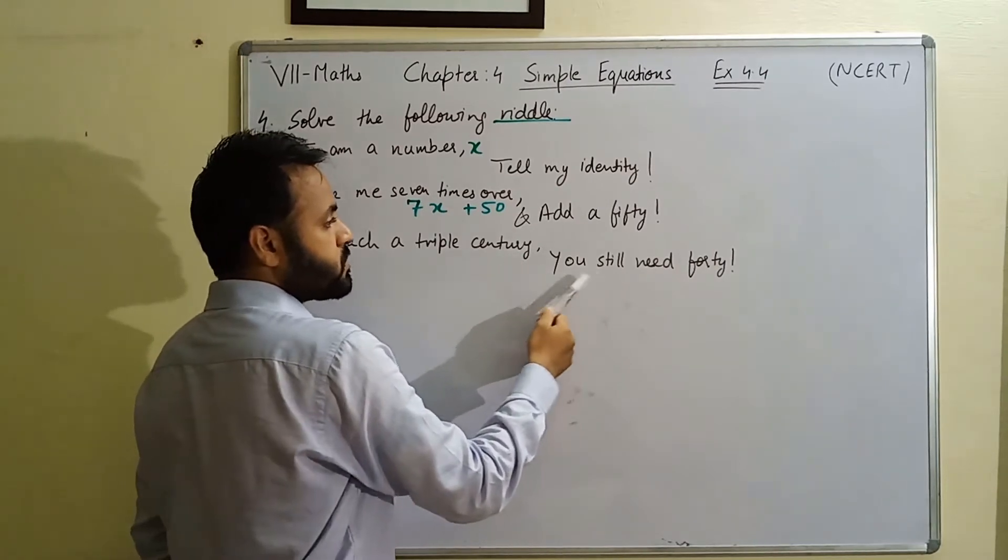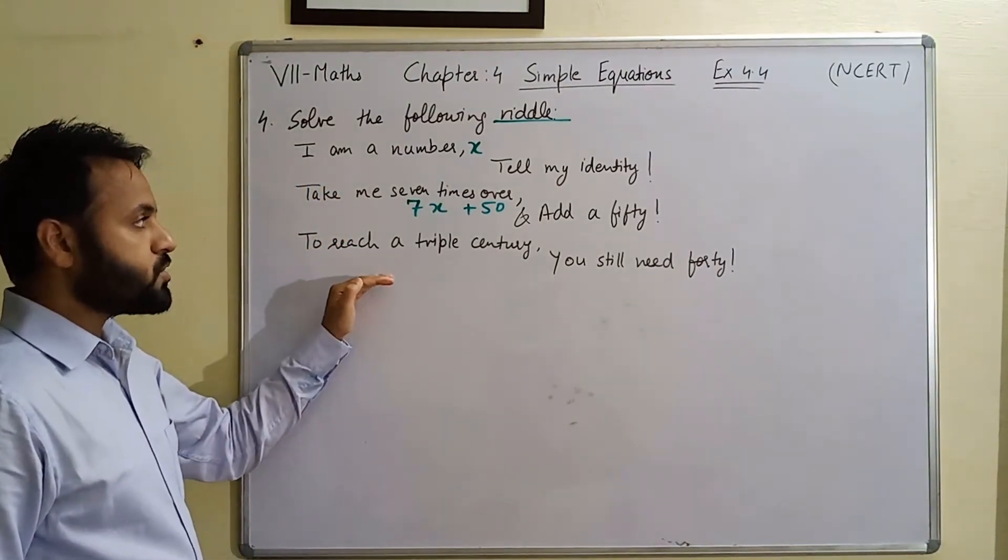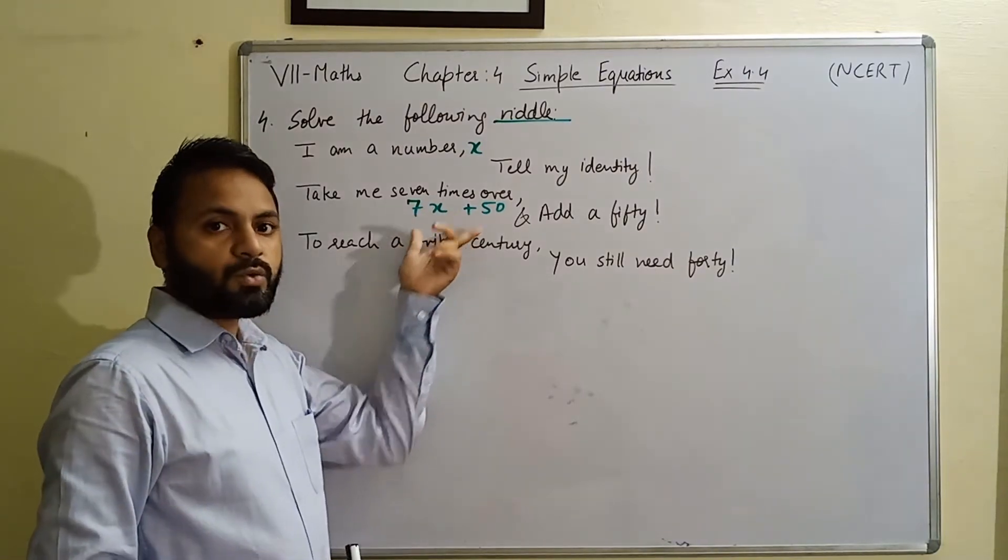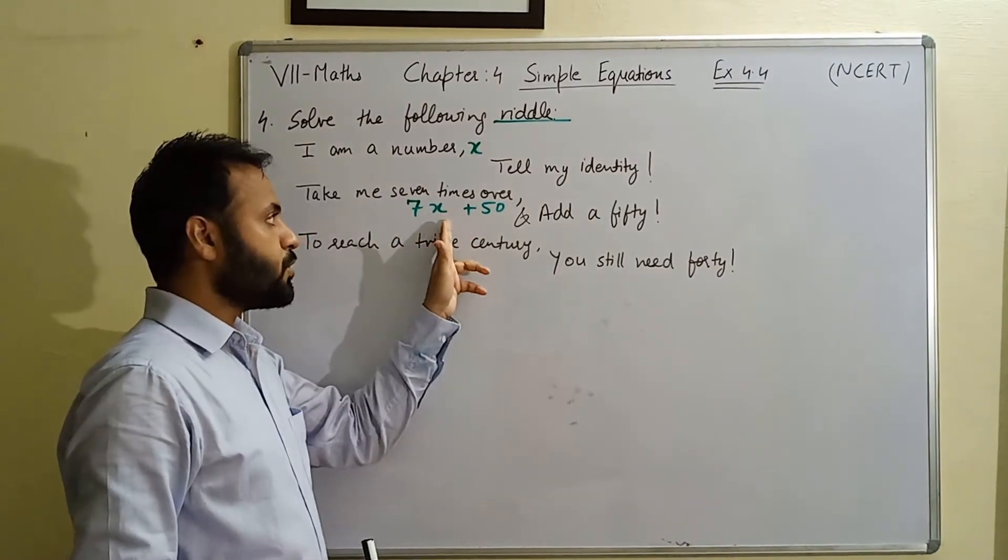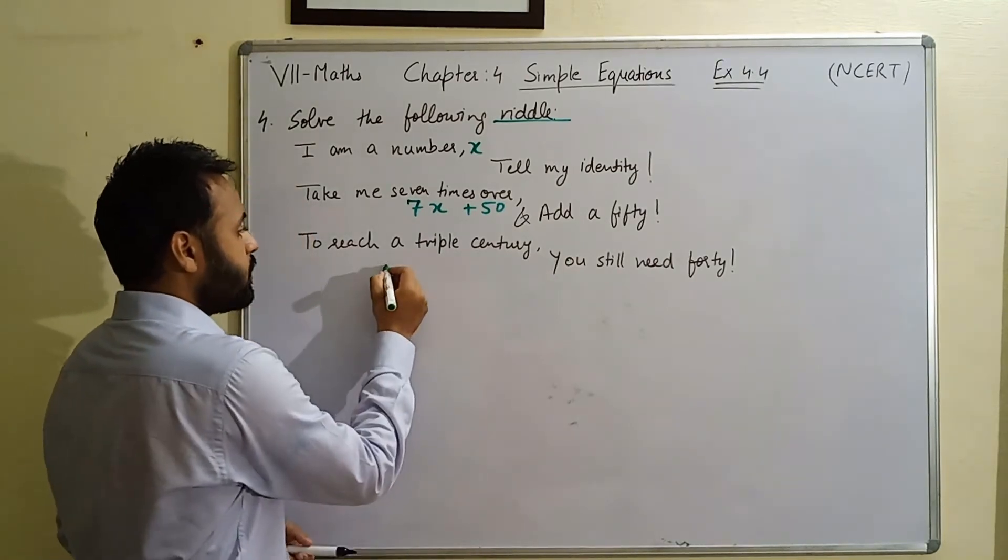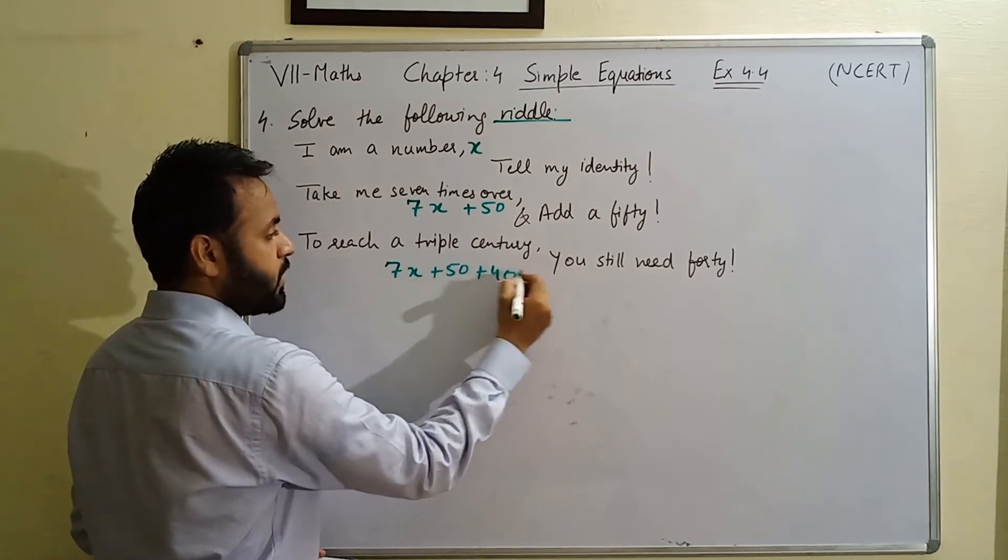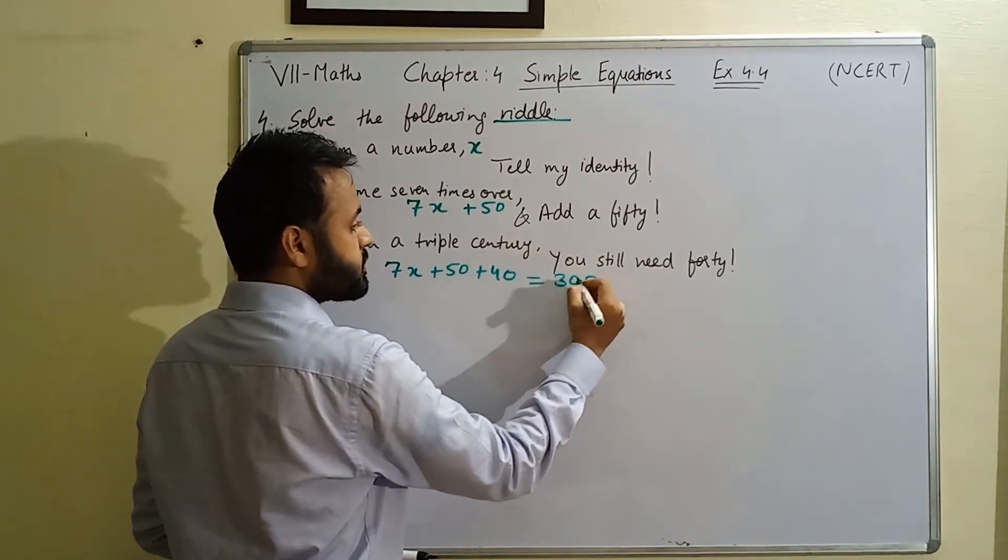And in next line what is written. To reach a triple century, you still need 40. Or a triple century tak pahunchne ke liye, so if we add 7x plus 50 and 40 more if we add, we will get a triple century.